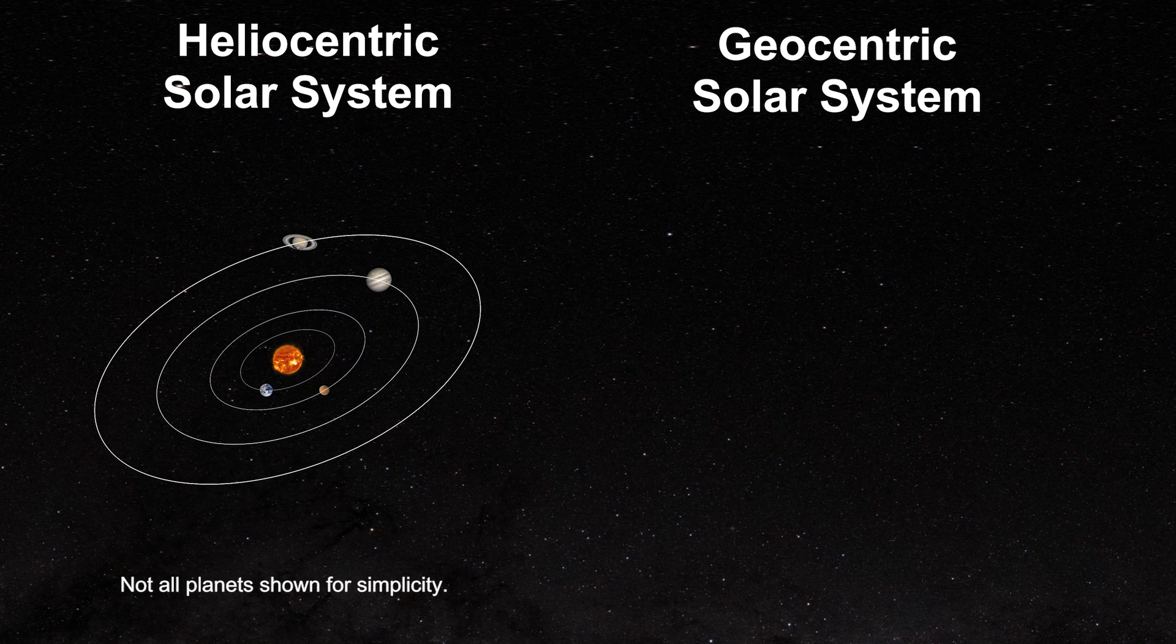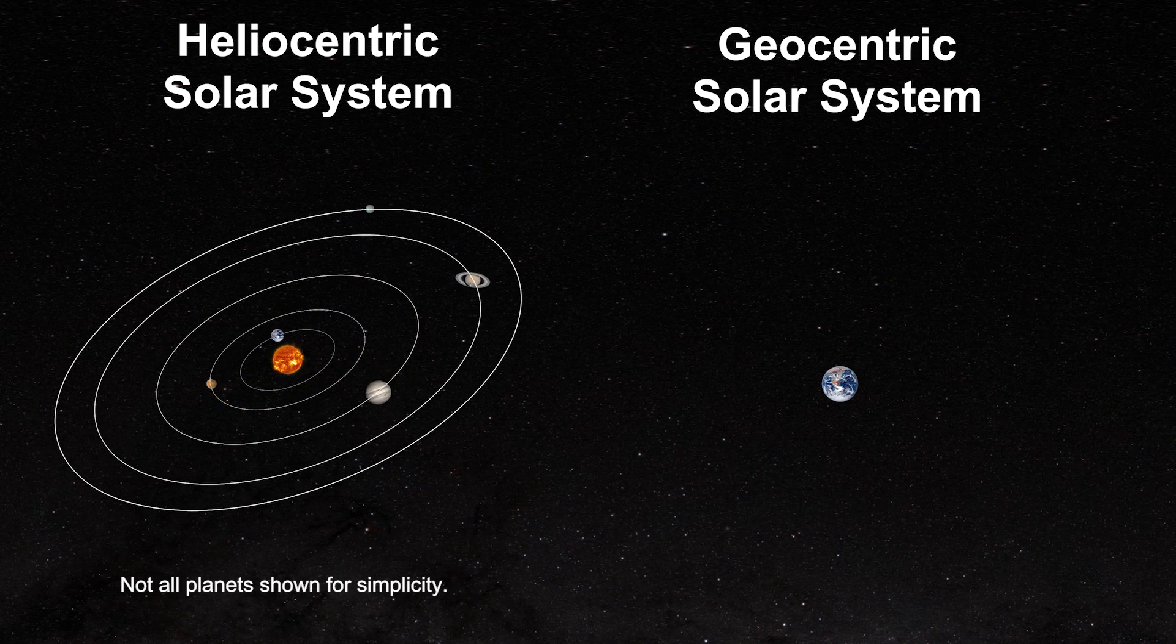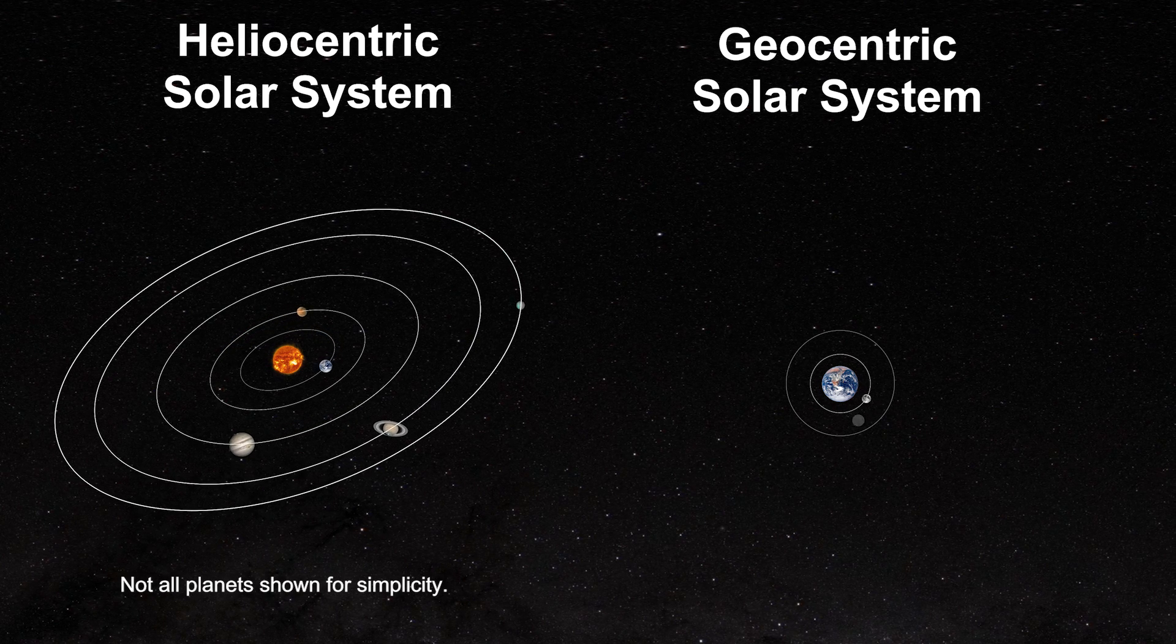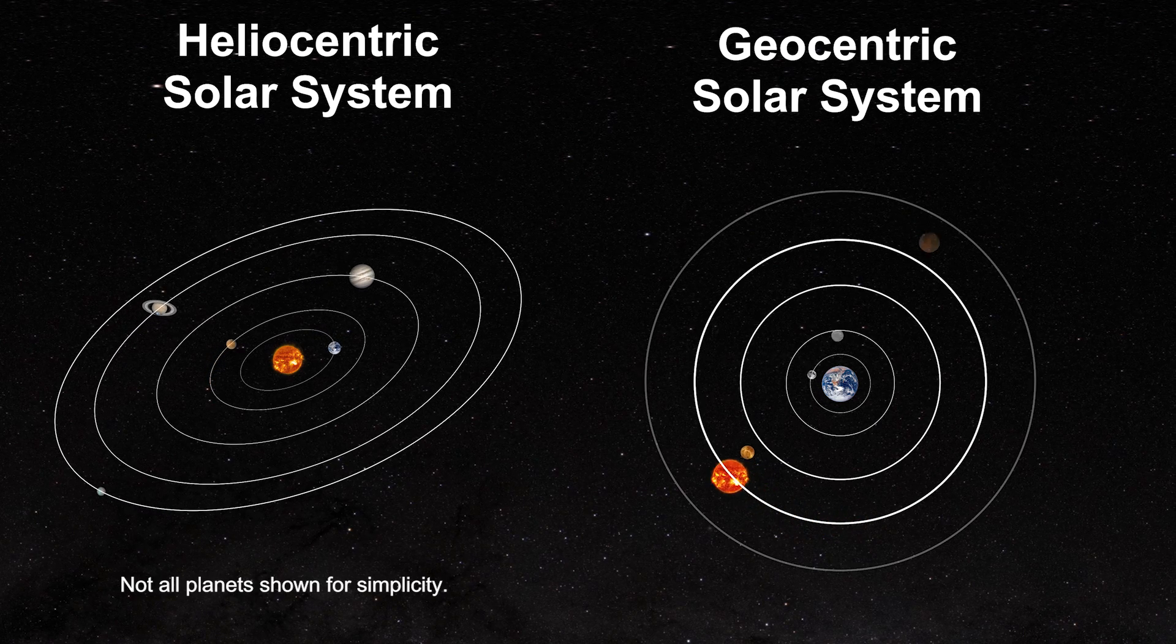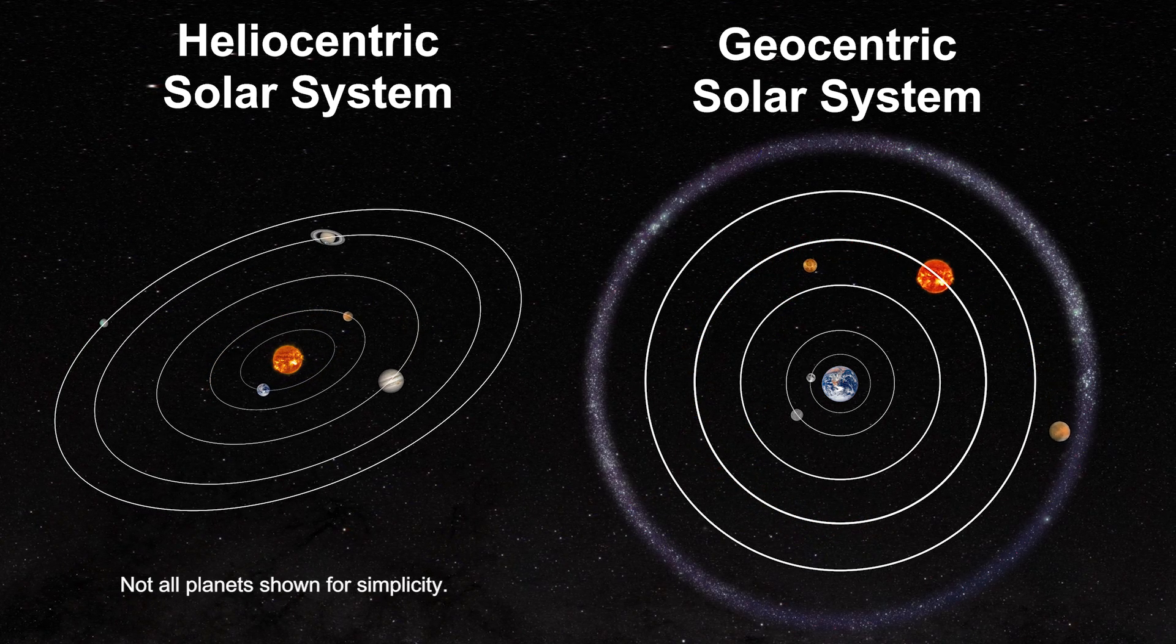Conversely, the Ptolemaic model placed the earth at the center. The geocentric model thus required that the planets executed strange motions or epicycles with the stars in a band around our solar system.